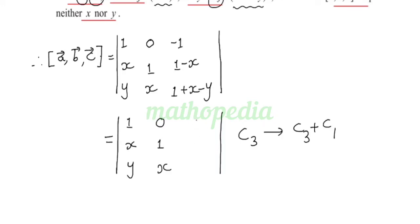So we get 0, 1, 1 plus X. Now expanding this determinant along the first row, we get 1 into cross multiply, so 1 plus X minus X. The other two terms are 0. So this is equal to 1 plus X minus X, and X cancels. We get 1.